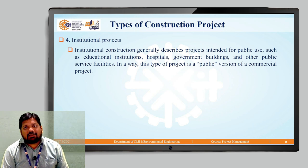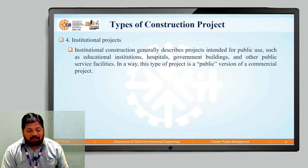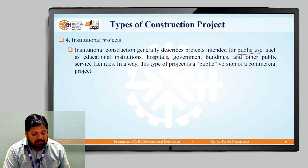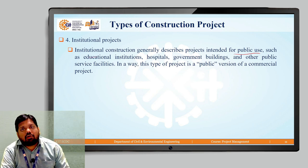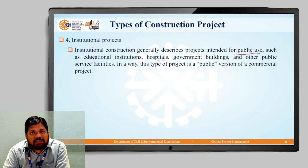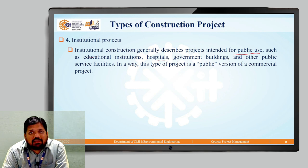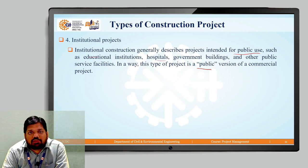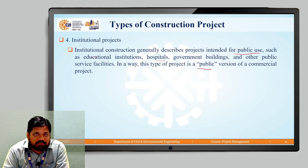The next type is the institutional project. It generally describes projects intended for public use, such as educational institutes like schools and colleges, government offices, government buildings, hospitals, and other public services — including water treatment plants and STPs. In a way, this type of project is the public version of the commercial project, from which the government tends to generate revenue.